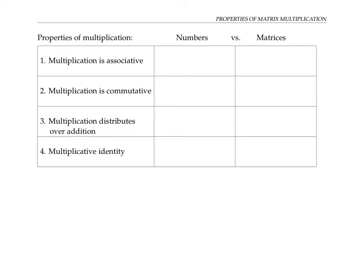Multiplication of numbers is associative. That means if I multiply a times B, and then multiply that by C, that's the same thing as multiplying a by the product of B and C — it doesn't matter how you group them. It turns out that matrix multiplication is also associative. I'll write capital letters to denote the matrices instead of numbers, but the property is the same.